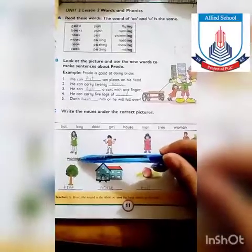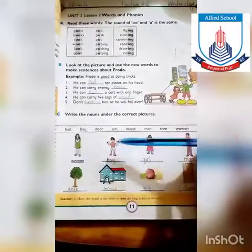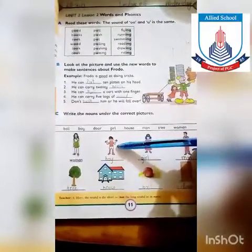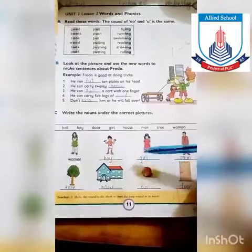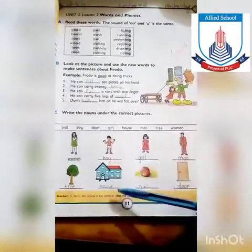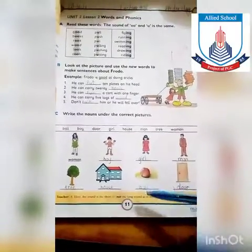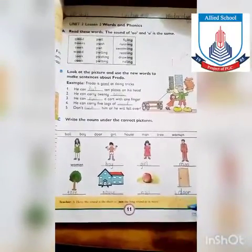یہاں پہ یہ woman ہے، woman کے نیچے انہوں نے already 'woman' لکھا ہوا ہے۔ یہاں پہ یہ کیا ہے؟ Boy, girl, man, tree, house, ball, door.